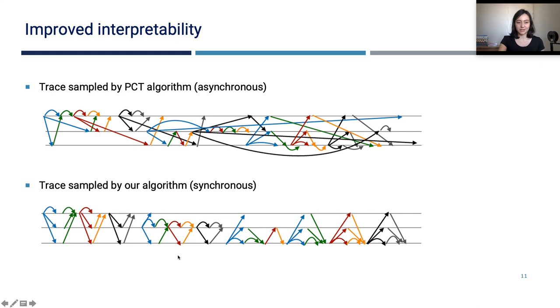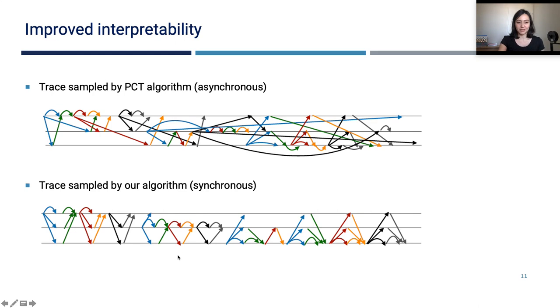I'd like to conclude with a summary of our testing algorithm for consensus implementations. Our algorithm exploits semantic properties, communication closure of consensus protocols. We sample from k-periodic uniform lossy executions with d process isolations. And this results in a much smaller sample set of executions, yet it is complete in the limit for proper selection of parameters k and d. Our algorithm can be used to discover new bugs in real-world large-scale systems. And the executions, the buggy executions our algorithm returns, are easier to understand and debug. Thank you for listening and see you in the Q&A session.